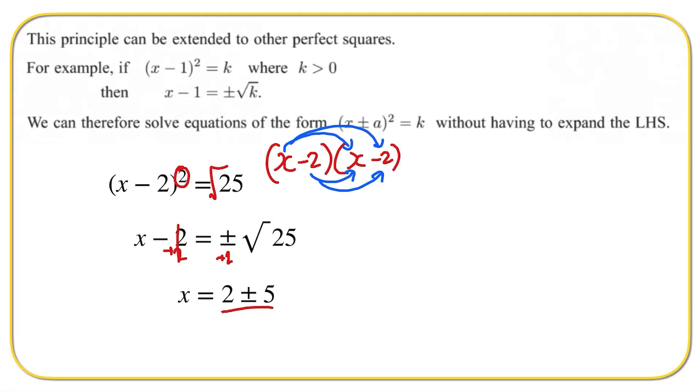There are two solutions to that: we can either say two plus five, which is seven, or we can say two minus five, which is negative three.